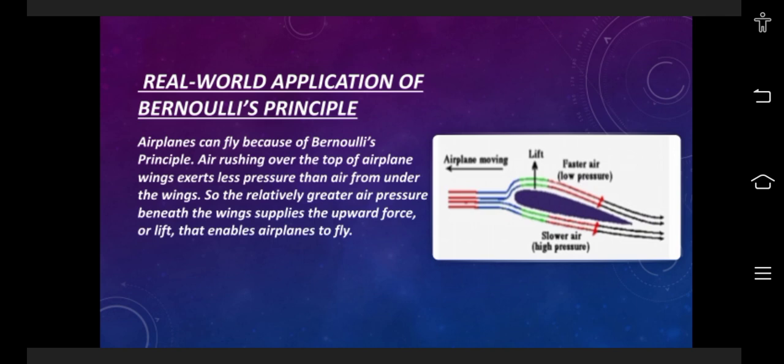The air flowing above the wings of an aeroplane exerts lower pressure compared to the air flowing under the wings. So relatively greater pressure below the wings supplies an upward force or lift that enables the aeroplanes to fly.